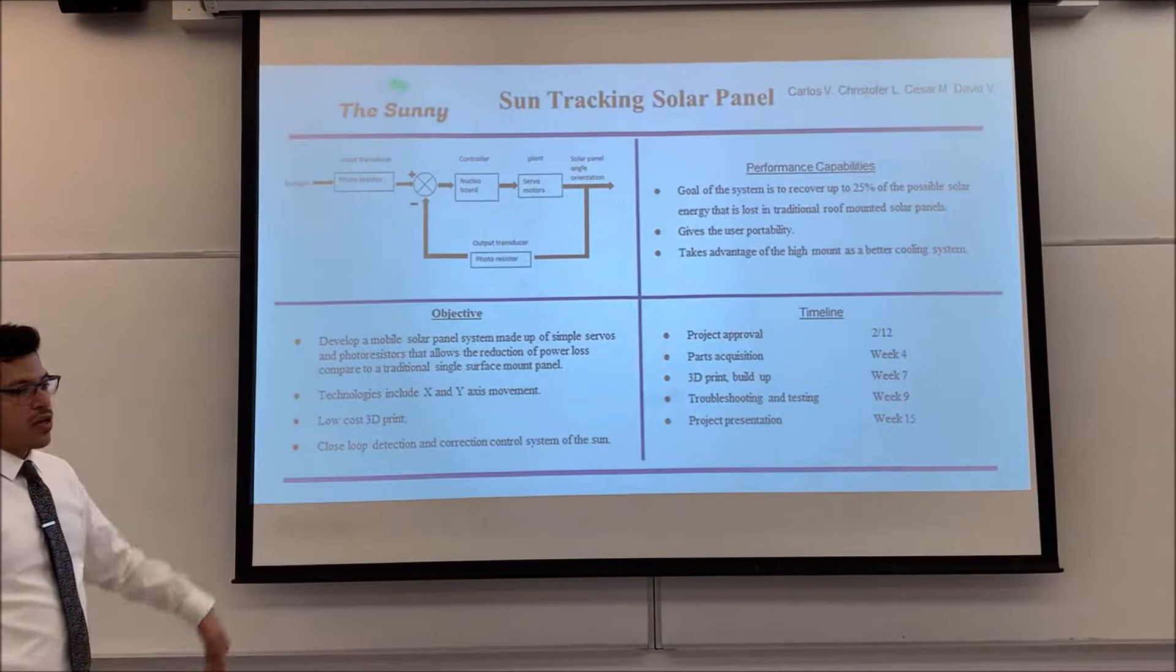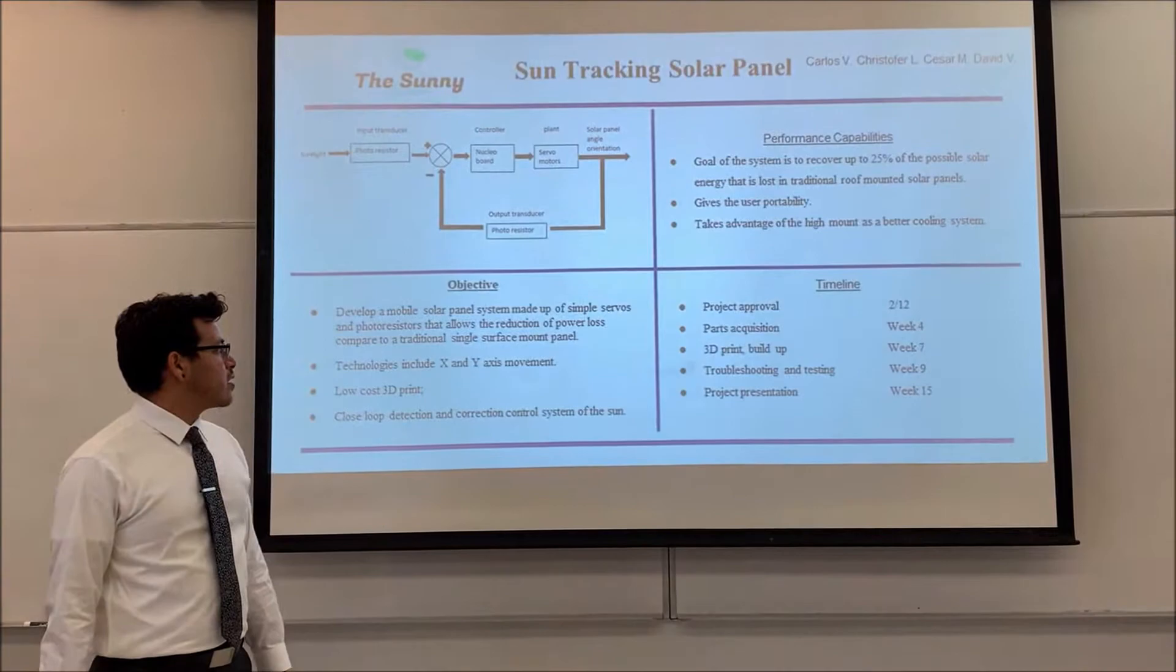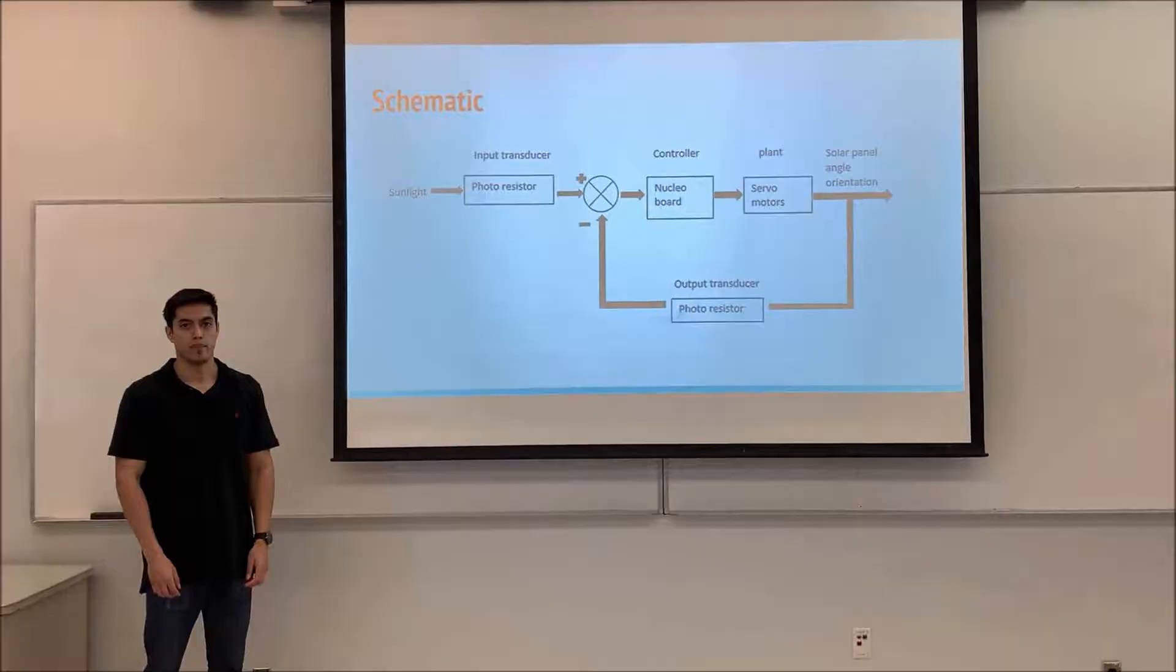We're just trying to do the objective. It's also low cost production. It's going to be able to move in the X and Y axis. It's a closed loop system and that's our timeline. Up to now we are between this part and this part. We just got the parts printed.